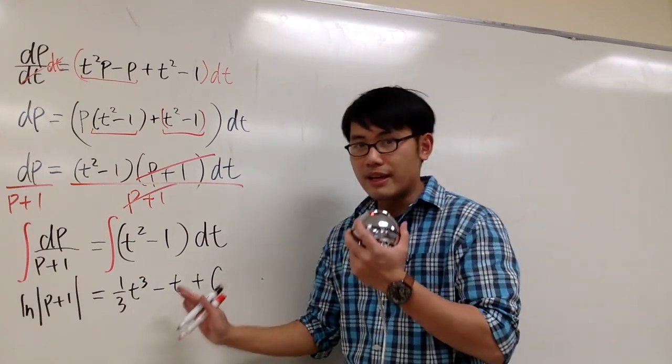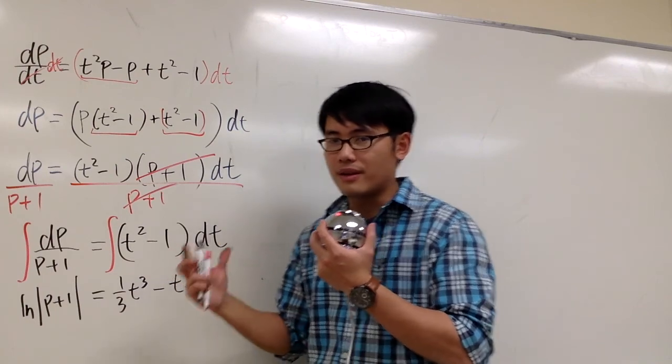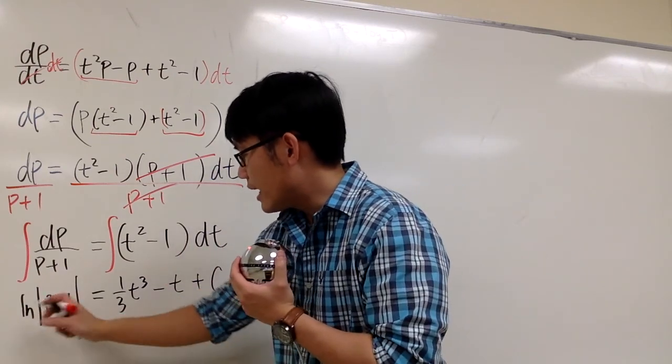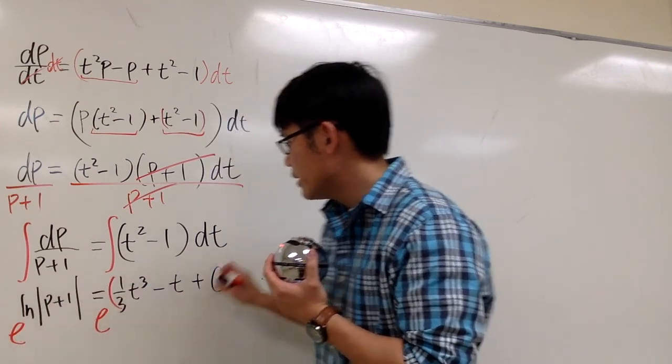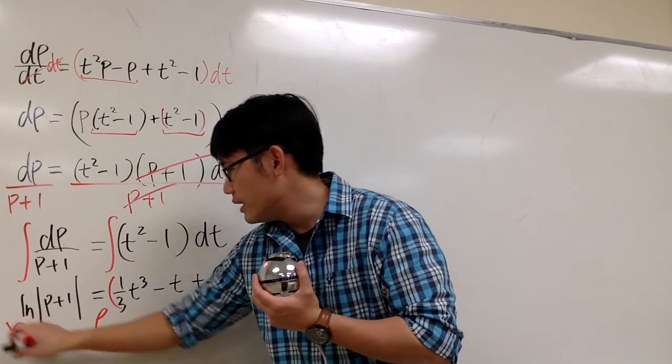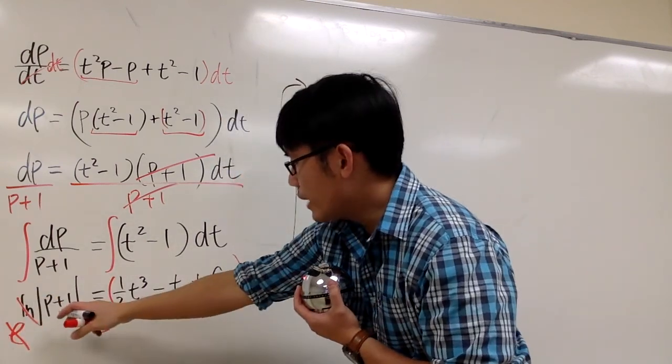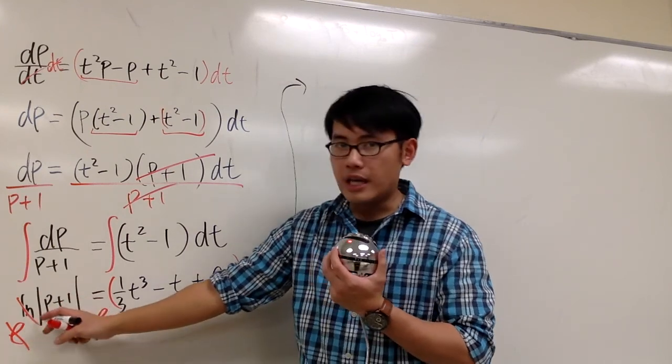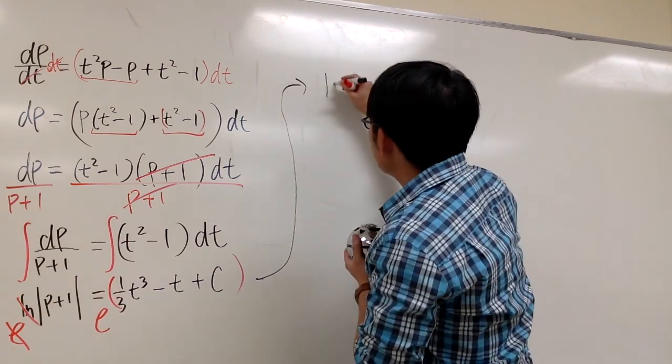And we're kind of done, but then whenever we can, we should try to solve for p, the variable right here. Well, this is inside of ln, so we will do e to that power, and then e to this power. This way, the e and ln cancel out. So, we have, and by the way, right here, you have to be super careful. Technically, I only cancel the e and the ln, but then I still have the absolute value. So, I still have the absolute value, p plus 1.